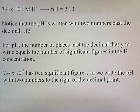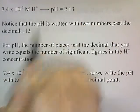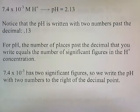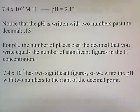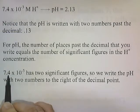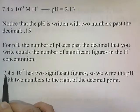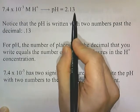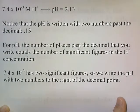Notice that the pH is written with two numbers past the decimal: .13. For pH, the number of decimal places you write equals the number of significant figures in the H⁺ concentration. 7.4 × 10⁻³ has two significant figures, so we write the pH with two decimal places. Two significant figures in the concentration — 7 and 4 — and two places past the decimal in the pH.